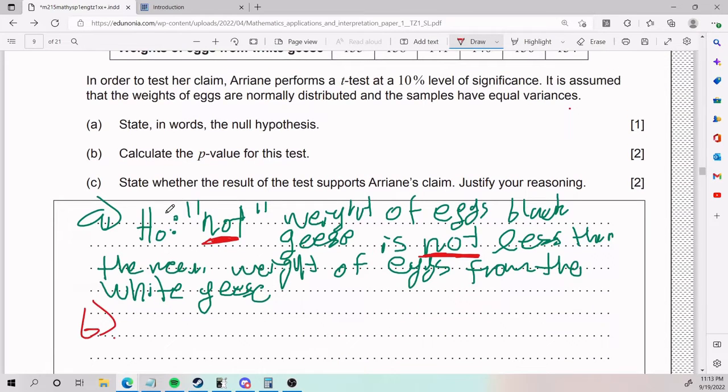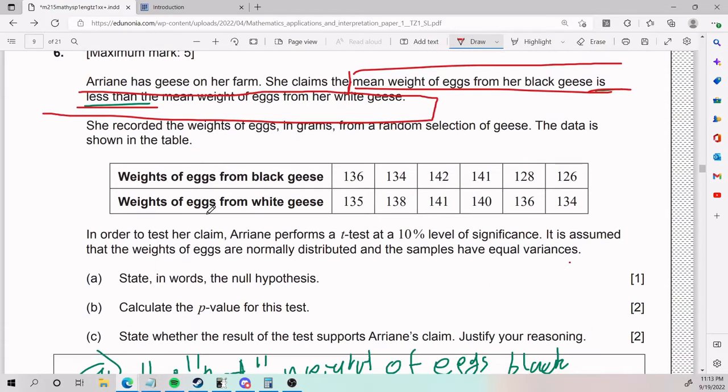Part B. Calculate the p-value for this test. Now, here people get a little bit confused because p-value sounds kind of weird. The first couple things you have to identify is what tests are we doing, what's the level of significance. Ariane is doing a t-test for weights of eggs from black geese and weights of eggs from white geese. You have to ask yourselves, how many sample sizes do I have? I have two, the ones from black and the ones from white.